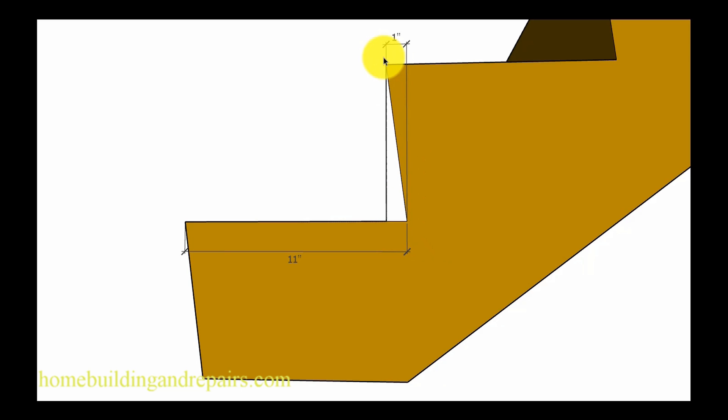Here we have the same thing. Instead of a one inch overhang we have a one inch undercut. So we're going to cut the stair stringers so that we can create an 11 inch step.